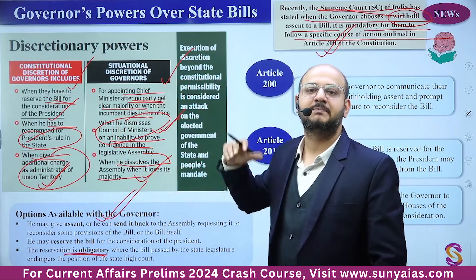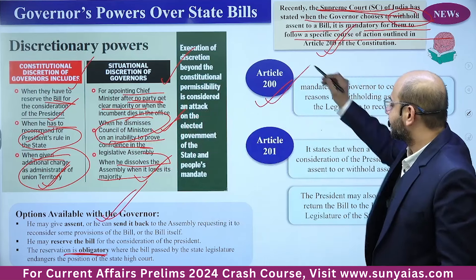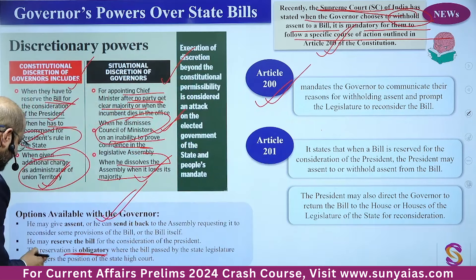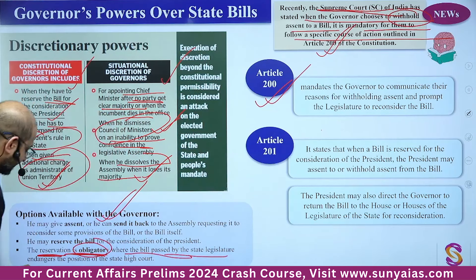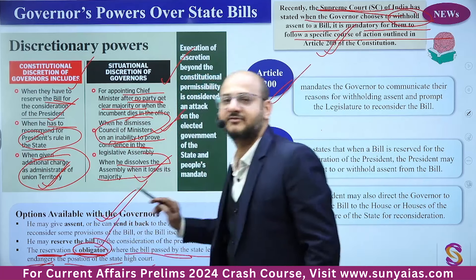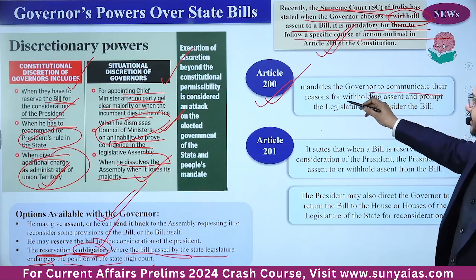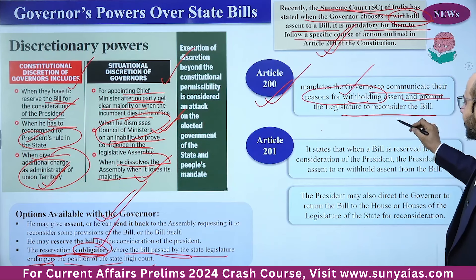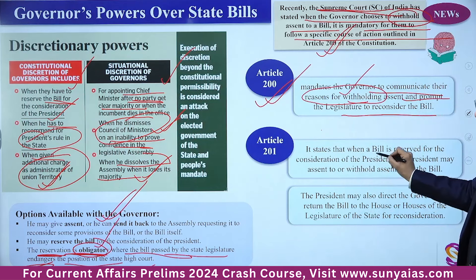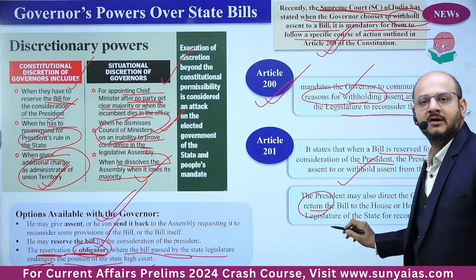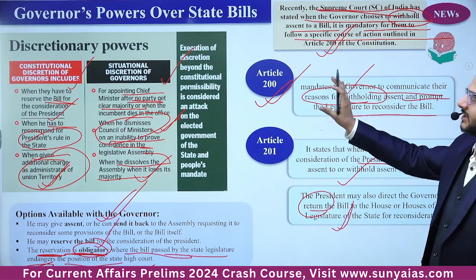Article 200 requires the Governor to mention reasons when withholding a bill. Reservation of a bill is obligatory when it endangers the position of the state High Court. The Governor must communicate reasons for withholding and prompt the legislature to reconsider. Article 201 states that when a bill is reserved for the President, the President may give assent, withhold assent, or return the bill to the legislature for reconsideration.